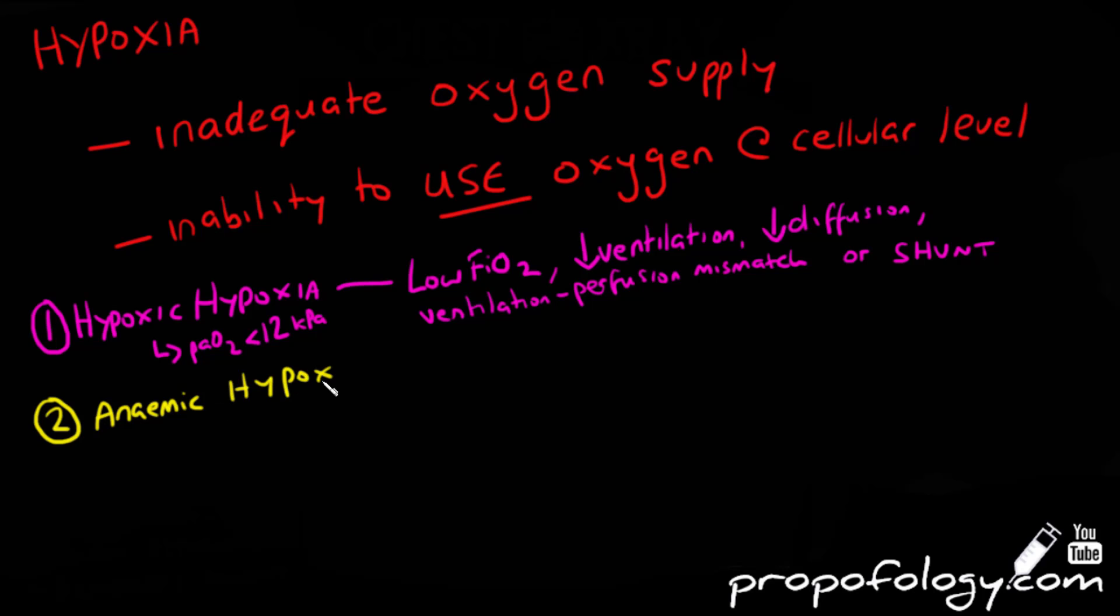Next on our list is anaemic hypoxia, where you'll see a normal PaO2, but there's an inadequate oxygen carrying capability. So there's low circulating haemoglobin levels such as in acute and chronic anaemias. And you'll have normal circulating haemoglobin levels but a reduced ability to carry oxygen, such as that seen in carbon monoxide poisoning.